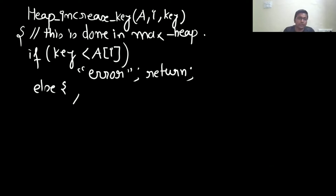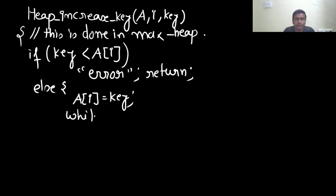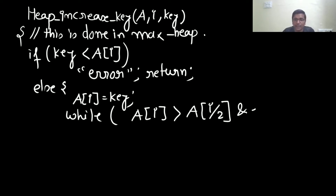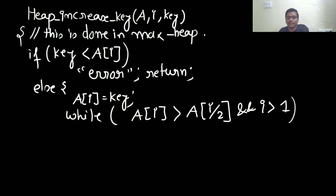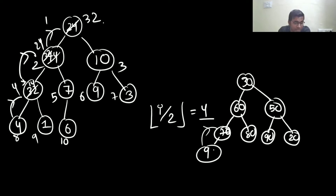Otherwise, in the else part: I set A[i] = key, placing the key value at that position. Then I run a while loop: while A[i] > A[floor(i/2)] — meaning the element is greater than its parent — and i should be greater than 1. The reason for i > 1 is that when i = 1 it is the root; dividing by 2 gives 0, which has no parent, so we stop at i > 1.